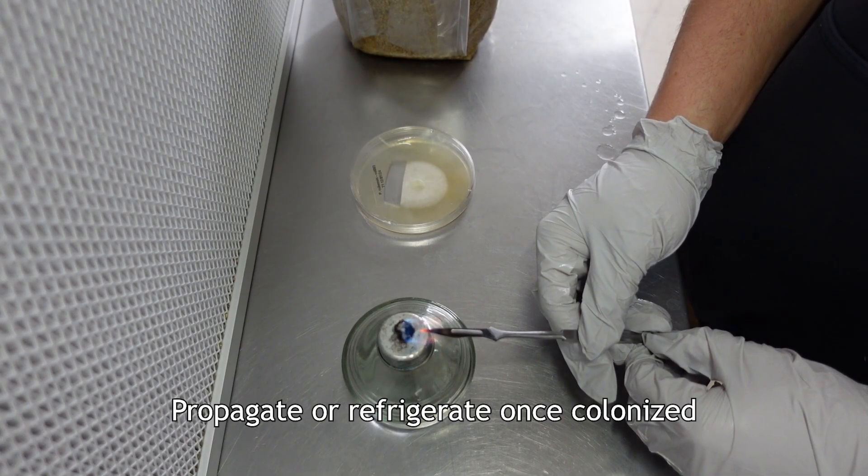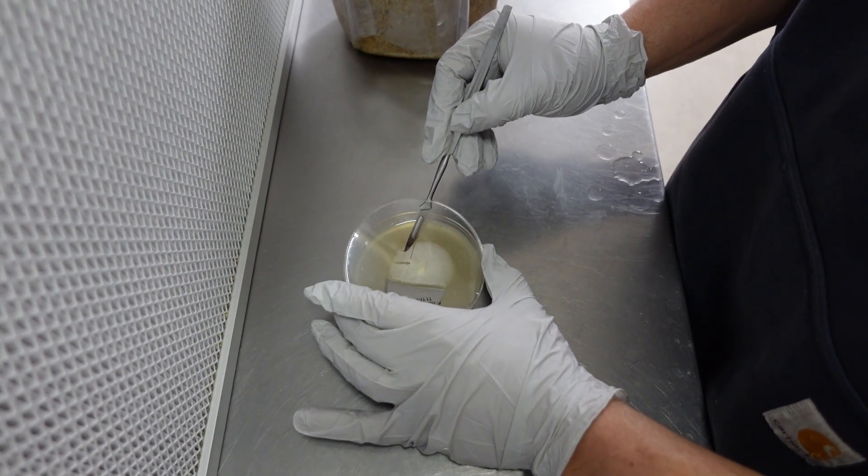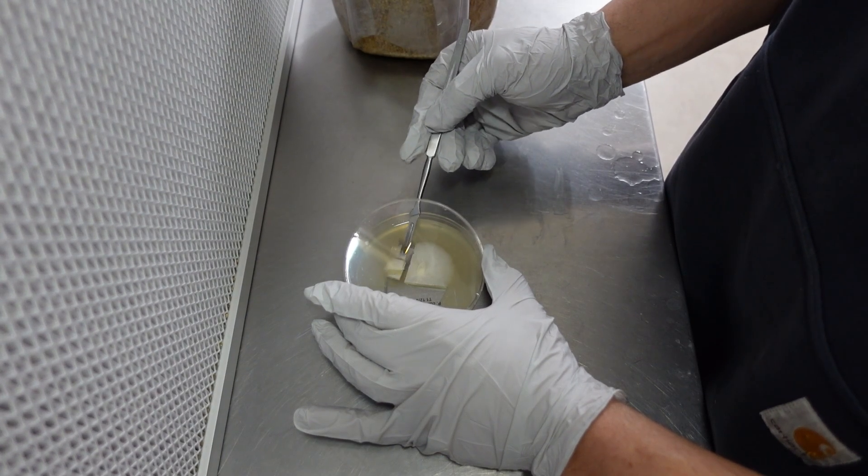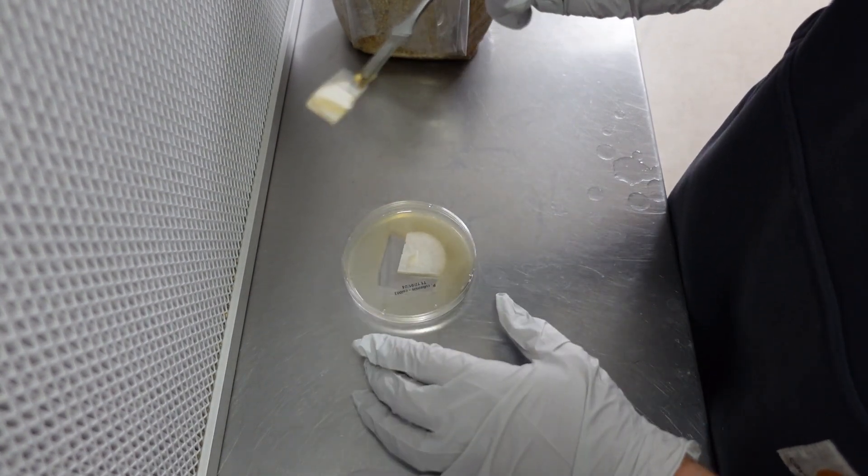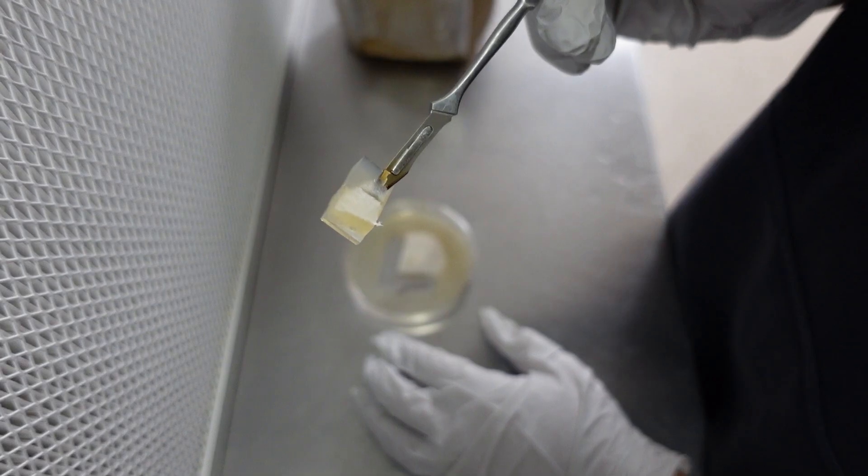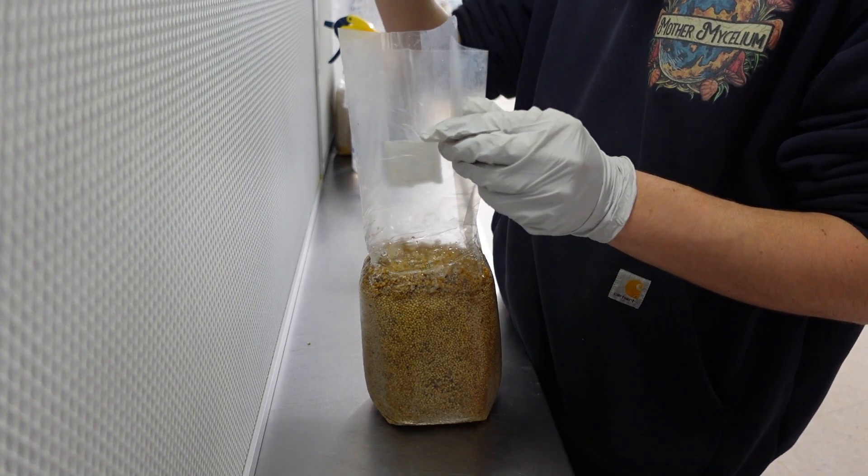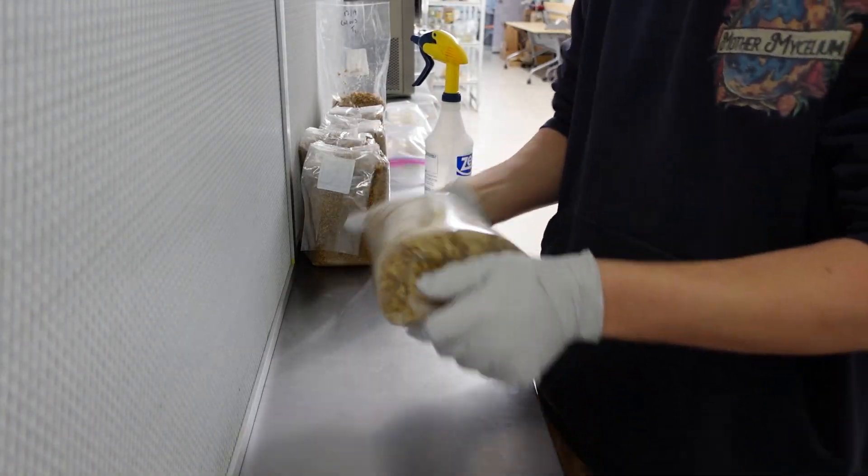To propagate your cultures, you can make grain spawn or liquid culture. This can then be used to inoculate bulk substrates for fruiting the mushrooms. Check out our other videos for detailed guides on making grain spawn, liquid culture, bulk substrates, and more.